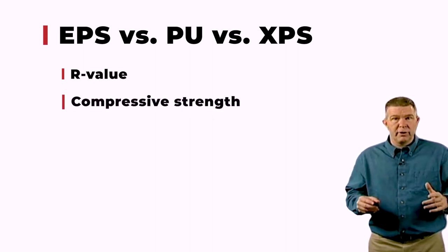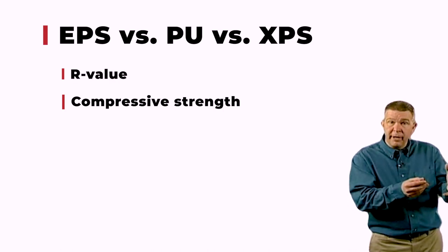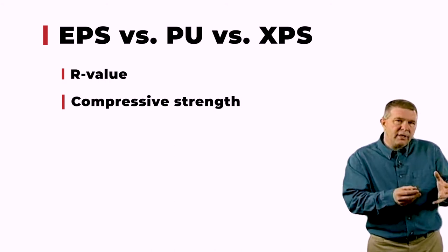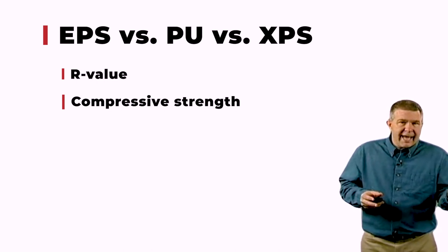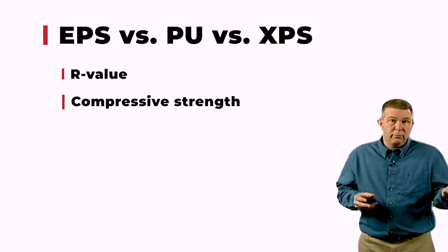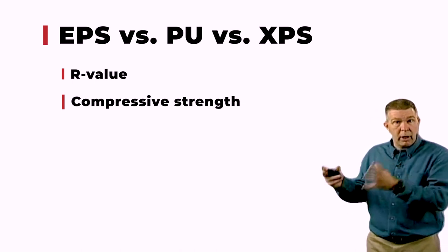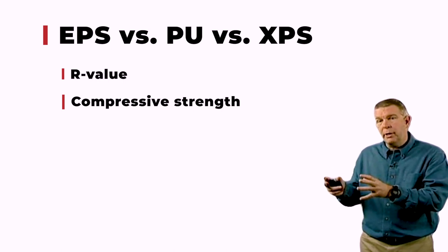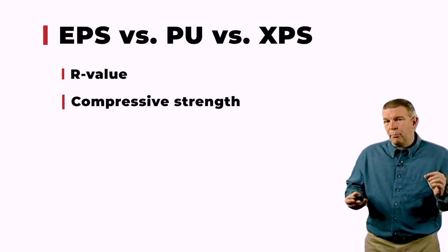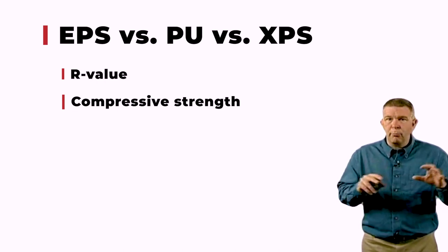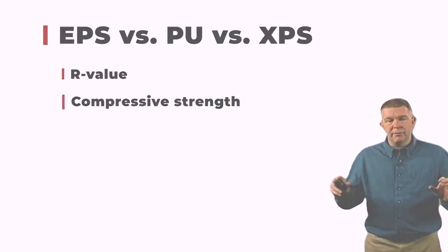After R-value, let's look at compressive strength — which is as much about density as anything. EPS has a density controlled through expansion of the bead: about 1 pound per cubic foot, and that's what most manufacturers use. XPS is about 1.8 pounds per cubic foot. Polyurethane core is up to about 2.2 to 2.3 pounds per cubic foot. There's a weight difference between EPS, XPS, and polyurethane, just as there's an R-value difference. There's also a compressive strength difference, but by the time you put a skin on the panel, compressive strength has very little to do with the performance characteristics of that panel — it's more about density.